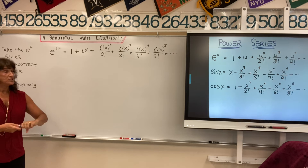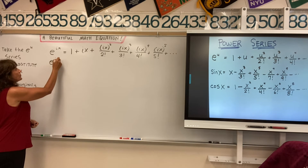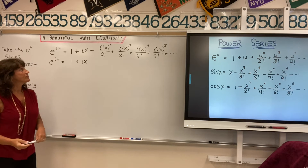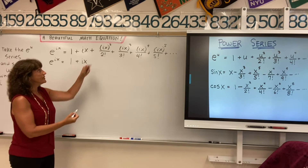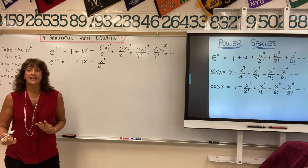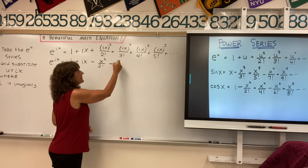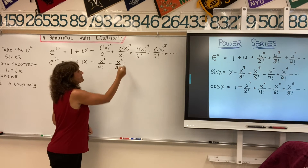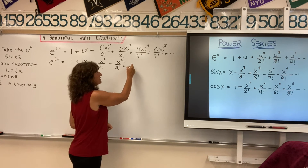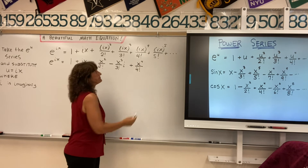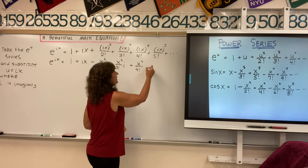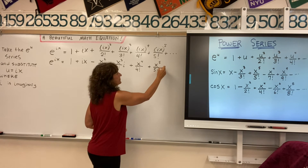Now let's simplify the i's. We have 1 — that's in simplest form. We have i times x — also in simplest form. Then i squared is negative 1, so we get negative 1 times x squared over 2 factorial. i cubed is negative i, so that term becomes negative x cubed over 3 factorial times i. i to the 4th is positive 1, so we get positive x to the 4th over 4 factorial. i to the 5th cycles back to i, so we get x to the 5th over 5 factorial times i.